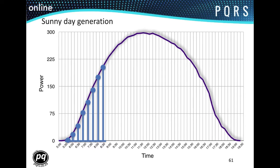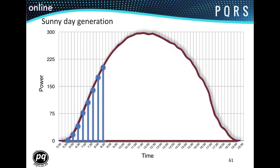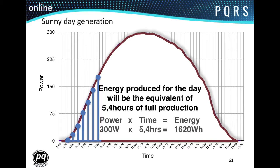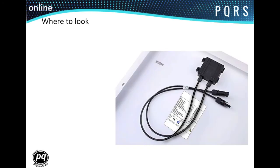When peak sun hours are referenced, it actually tells us the amount of energy that can be generated over a period of one day, where the 5.4 hours have been averaged over a period of a year. We'll take a look at this principle in the upcoming slide.